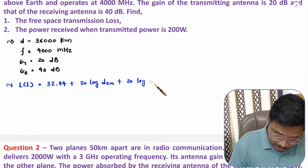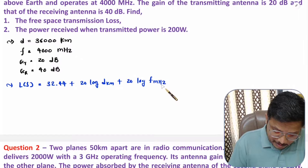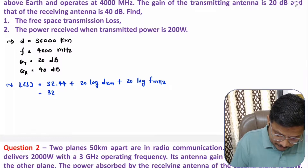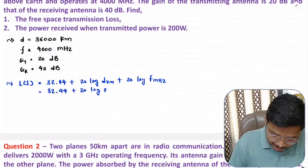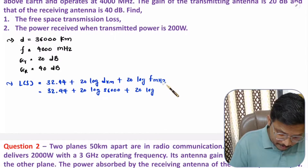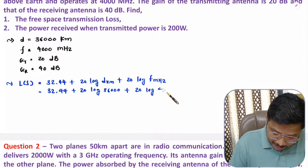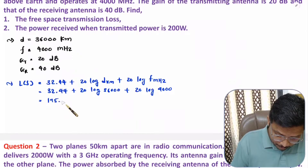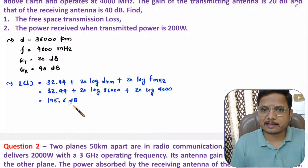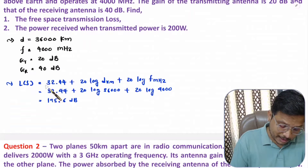Free space transmission loss = 32.44 + 20 log(36,000) + 20 log(4000). Solving this in a calculator gives 195.6 dB. If there is any error, just note it down. That is how one can calculate free space transmission loss.